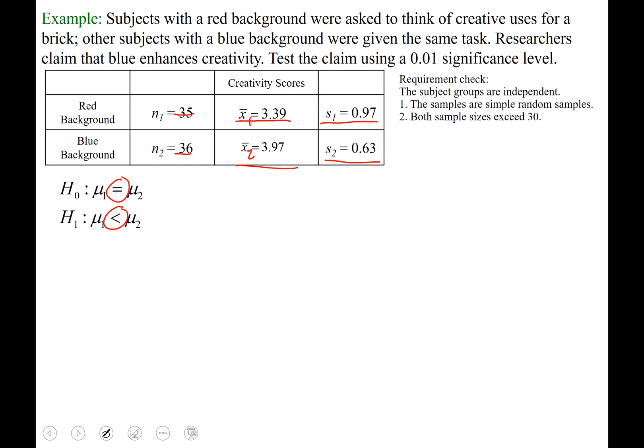And the reason we went with less than, this one's a little tricky in the wording. It's saying that researchers claim that blue enhances creativity. So they're saying that B for blue should have a greater average creativity score than the red. So B is greater than R. Blue enhances creativity more than red. But there's a problem there. We have set R as population 1, this is our sub 1, and this is our sub 2. But now if we swap them both to μ's, it becomes μ sub 2 is greater than μ sub 1, which is what we have written there. It's just read from right to left instead of left to right.